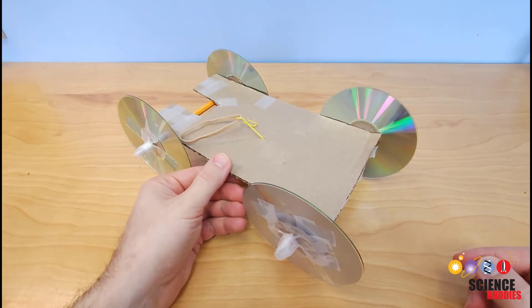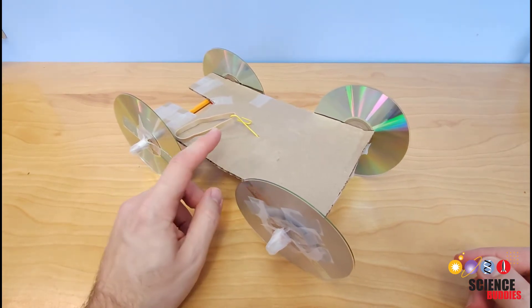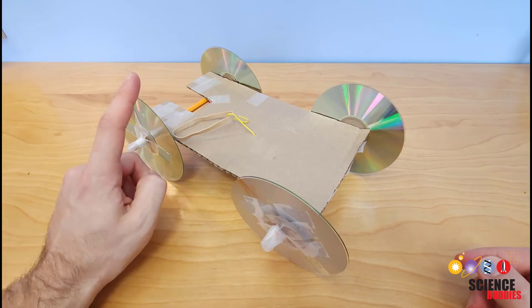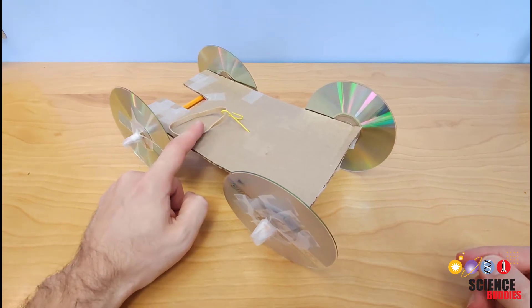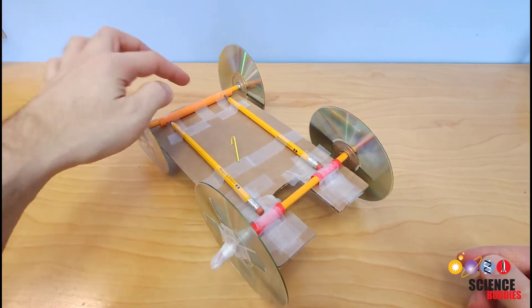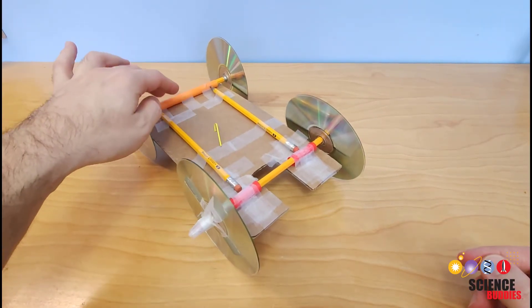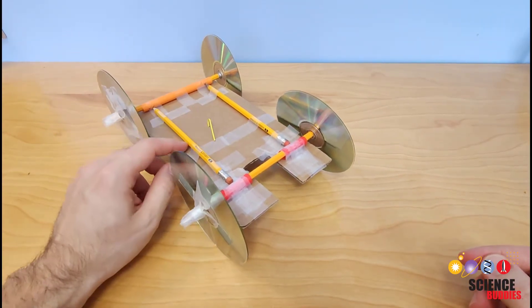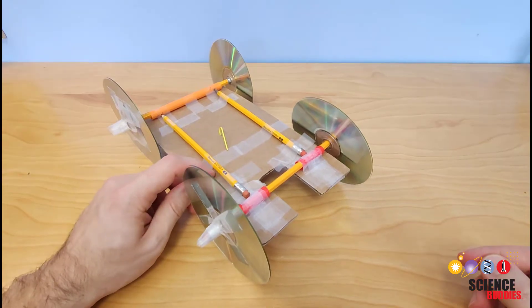So if we take a look at our example car here, we see that we have one sheet of cardboard, four CDs, one rubber band, one paper clip, two straws, four pencils - two used as axles and two used as extra support on the frame here - and a bunch of tape.